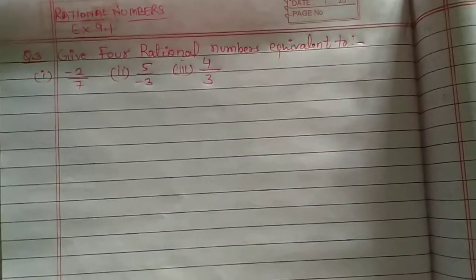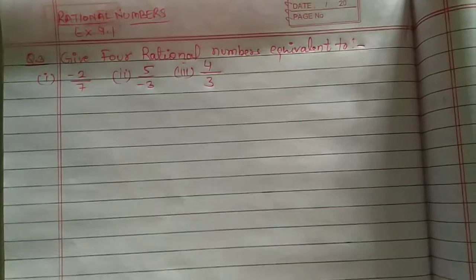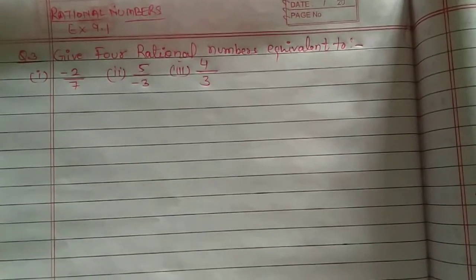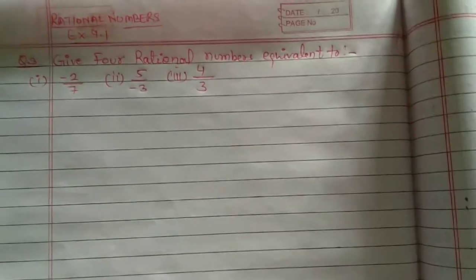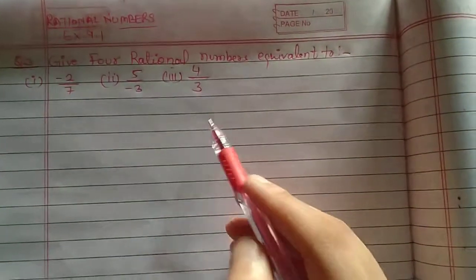And the question is: give 4 rational numbers equivalent to minus 2 upon 7, 5 upon minus 3, and 4 upon 3.